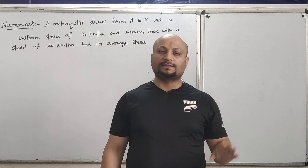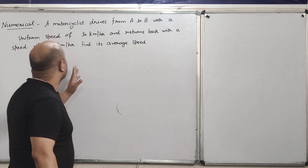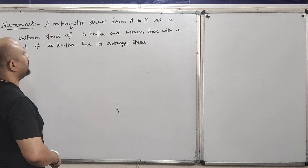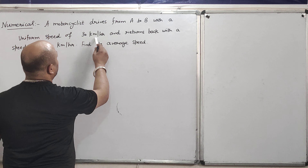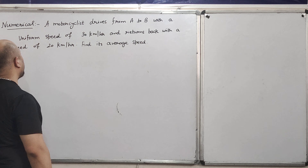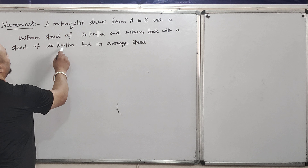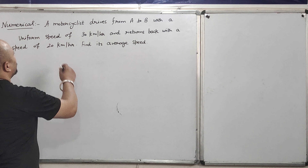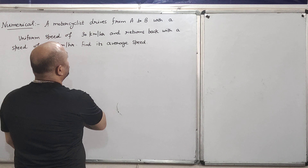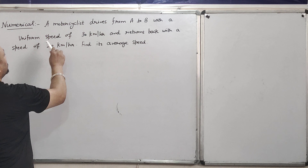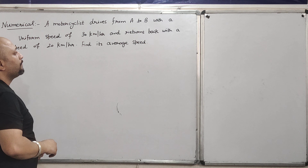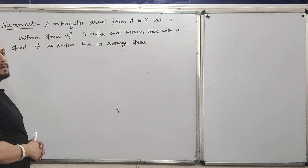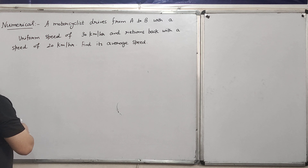Let's start with today's numerical — it is on my back screen, you can see it. A motorcyclist drives from A to B with a uniform speed of 30 km per hour and returns back with a speed of 20 km per hour. Find its average speed. I am repeating: a motorcyclist drives from A to B with a uniform speed of 30 km per hour and returns back with a speed of 20 km per hour. Find its average speed.